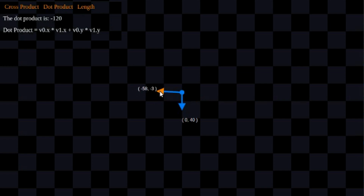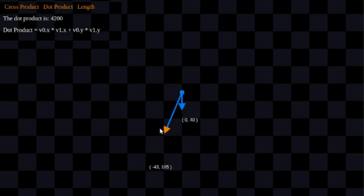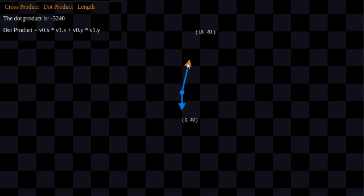If they're facing the same direction, the dot product is going to be positive. They're going to face the same direction within a 180-degree range — it's a very broad thing — but so long as they're facing the same direction within that 180-degree range, dot product is going to be positive. If they're facing apart, dot product is going to be negative.